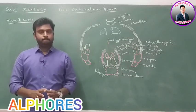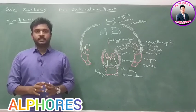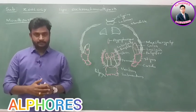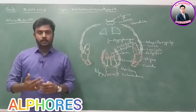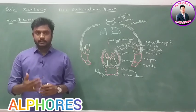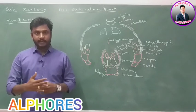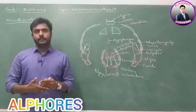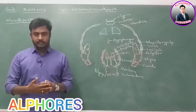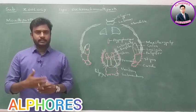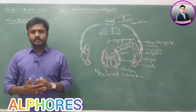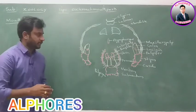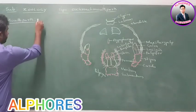In the head, mouth parts are present which are useful for the cutting of food materials, just like our teeth. In our mouth, teeth are present which are useful for cutting, grinding, and incising food materials. Similarly, mouth parts are present in the cockroach. The mouth parts of cockroach are the biting and chewing type.